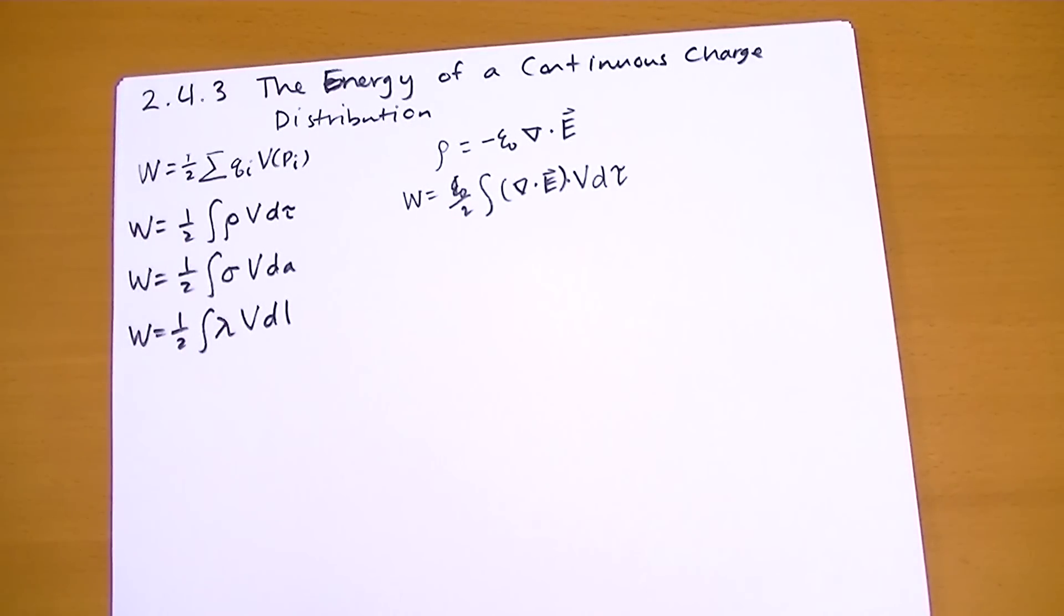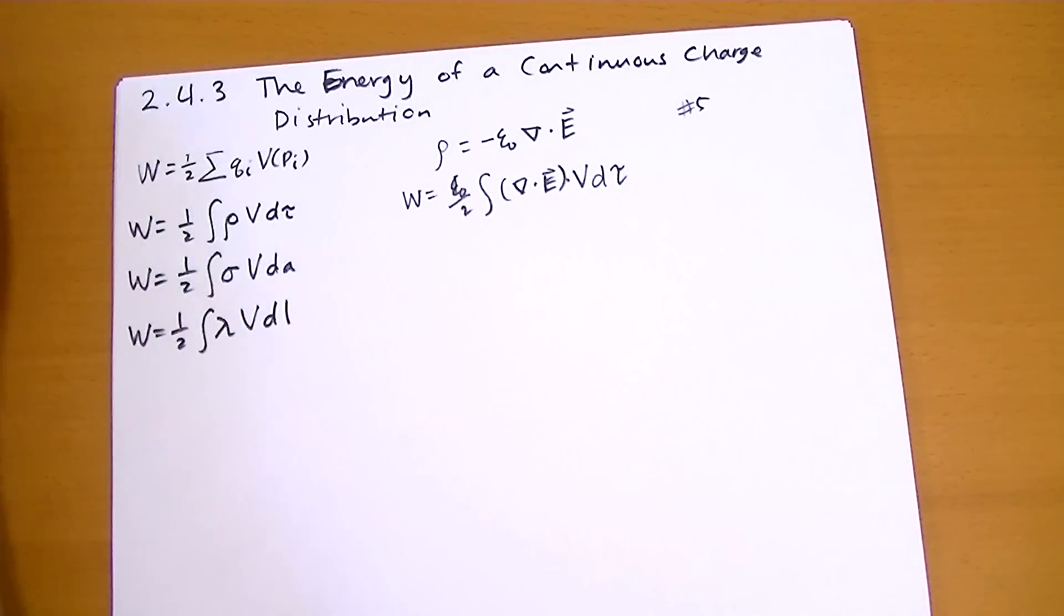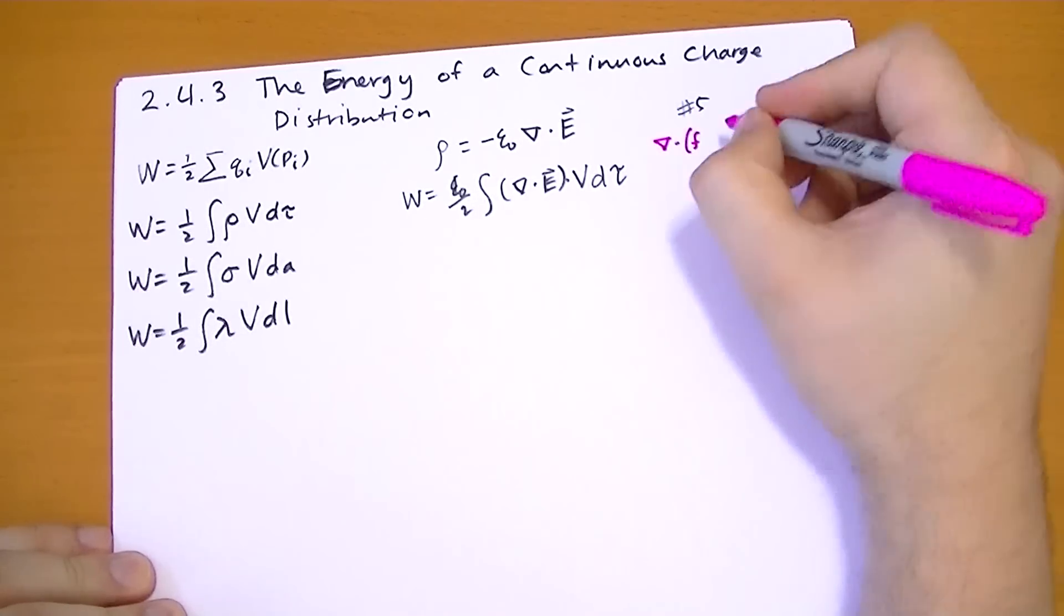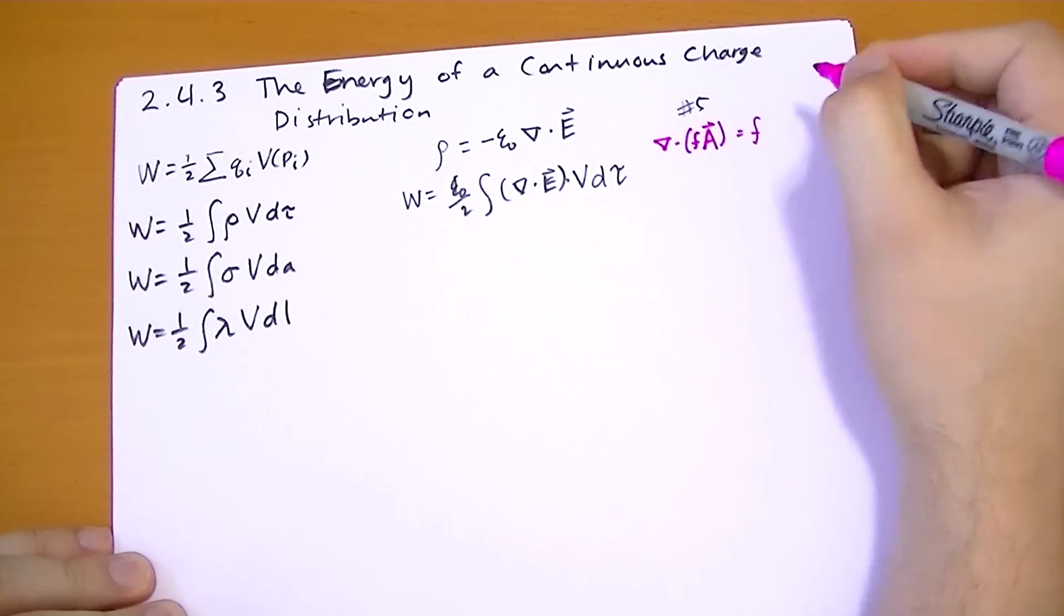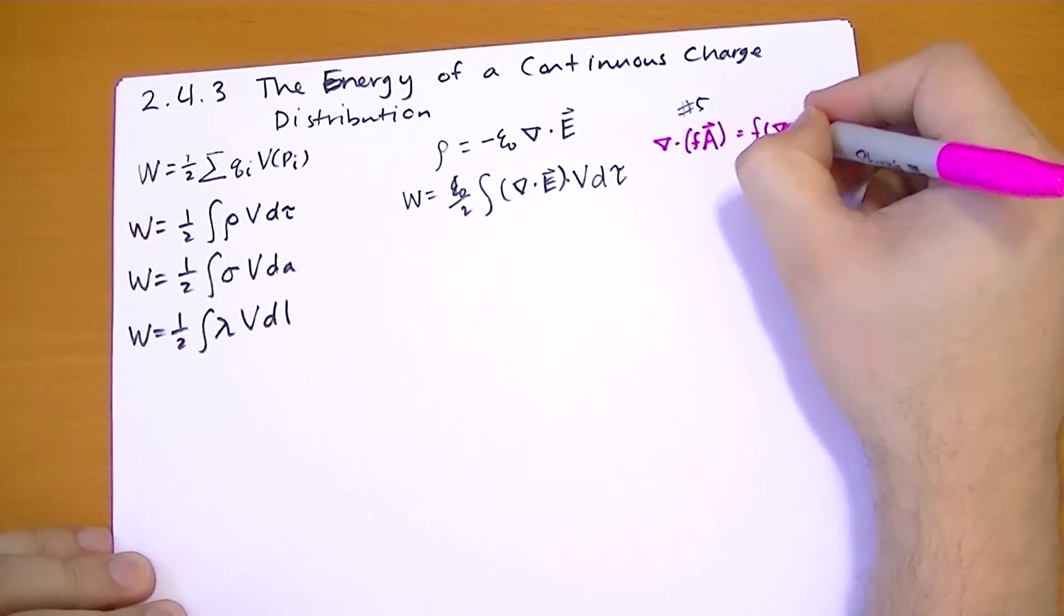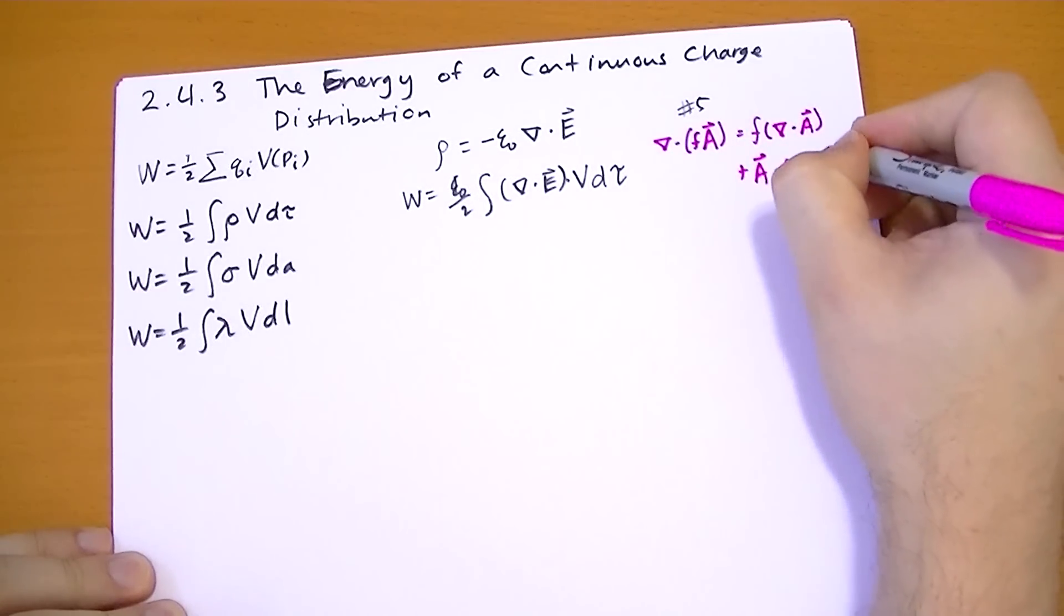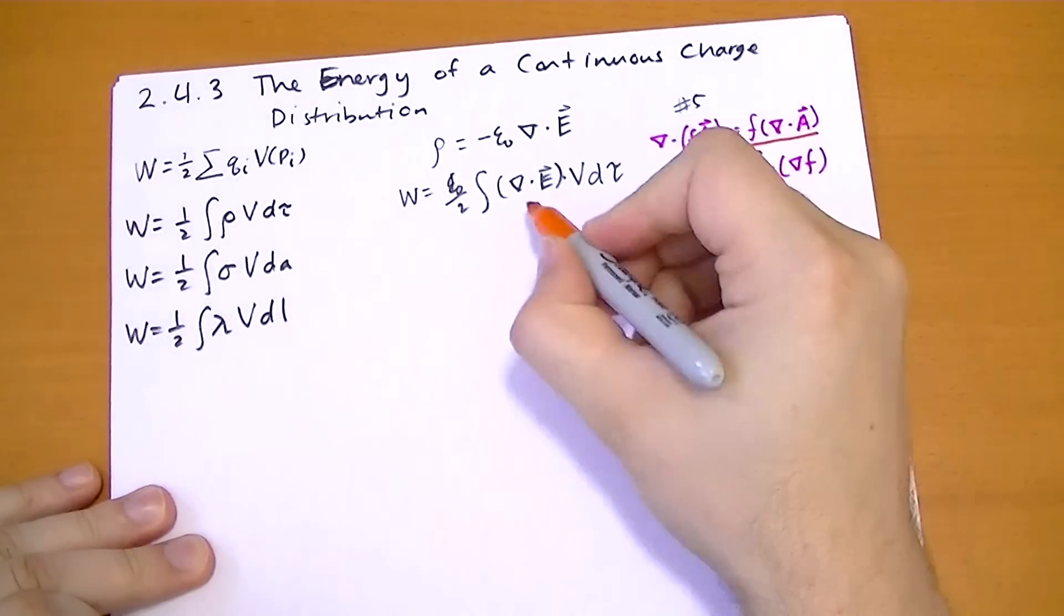Now if we go into the back of the book and we look at product rule number 5. That reads as follows. We have the divergence of some scalar field times a vector field is equal to that scalar field times the divergence of that vector field plus the vector field dot the gradient of that scalar field.